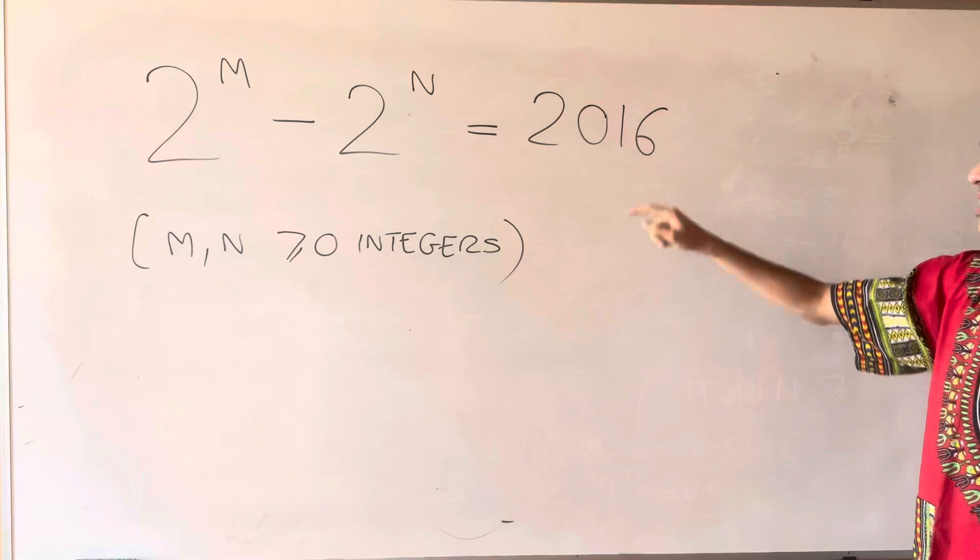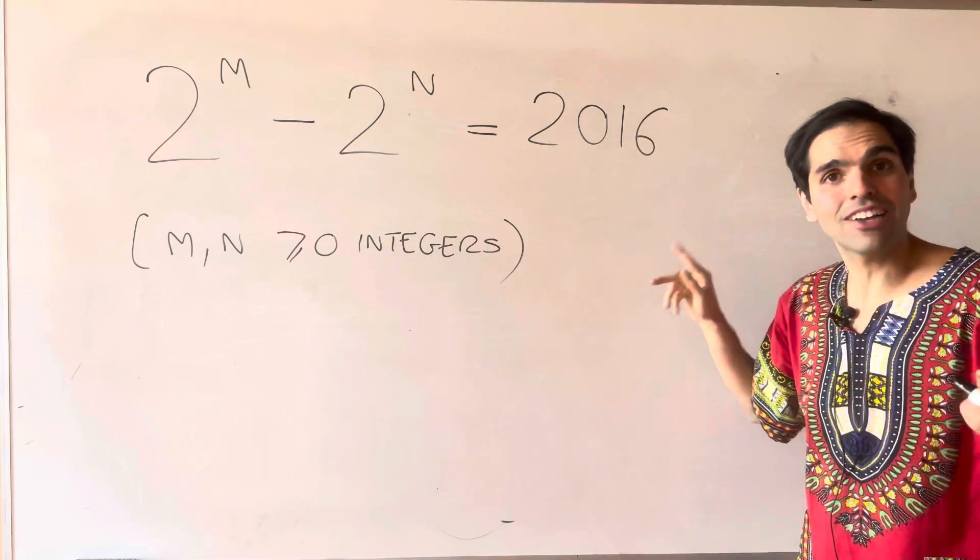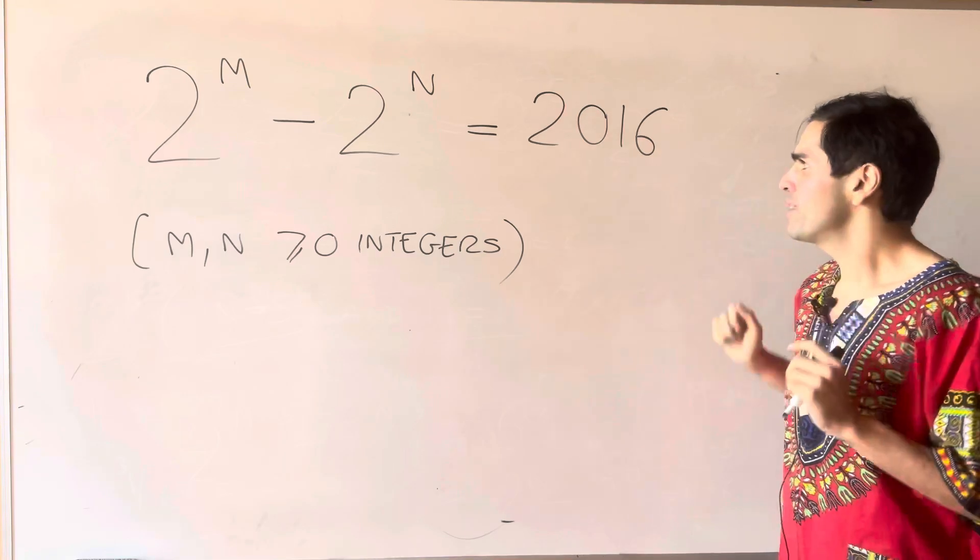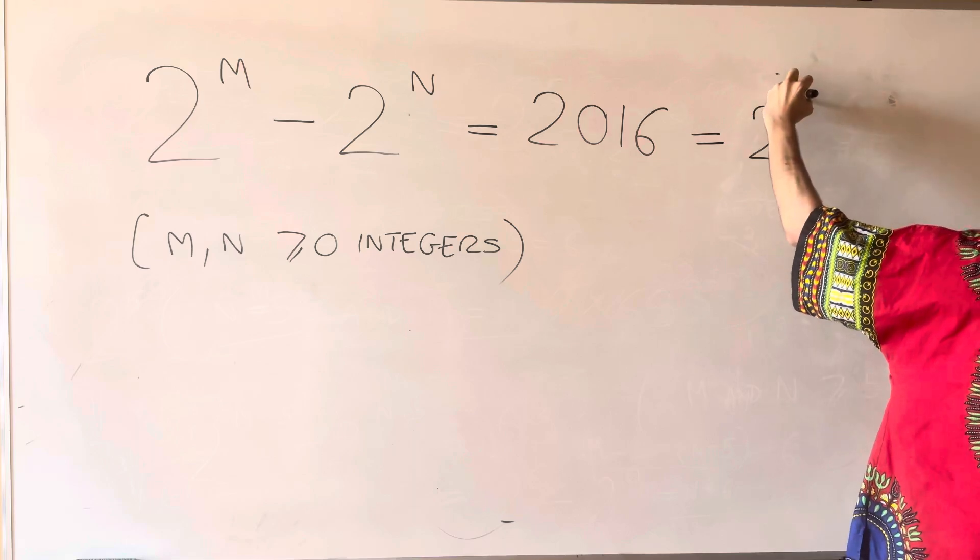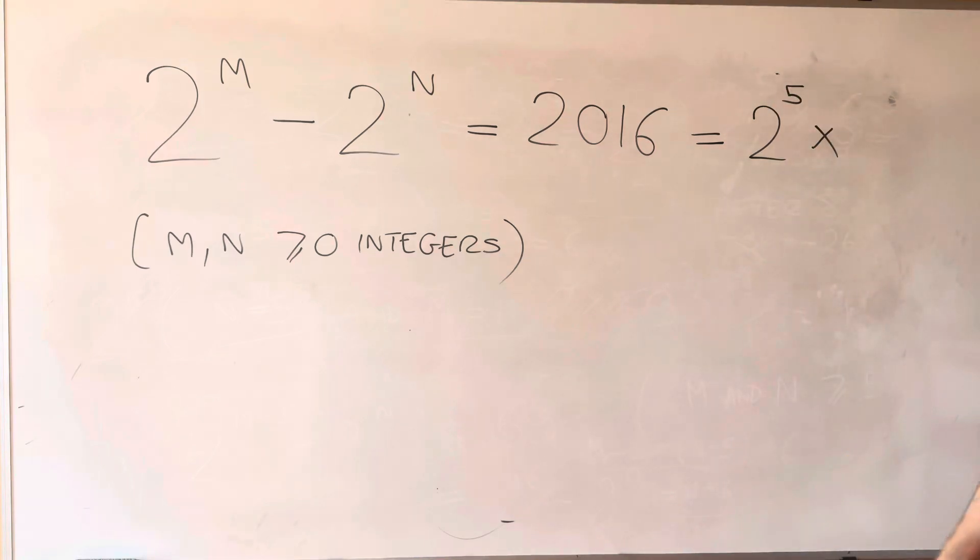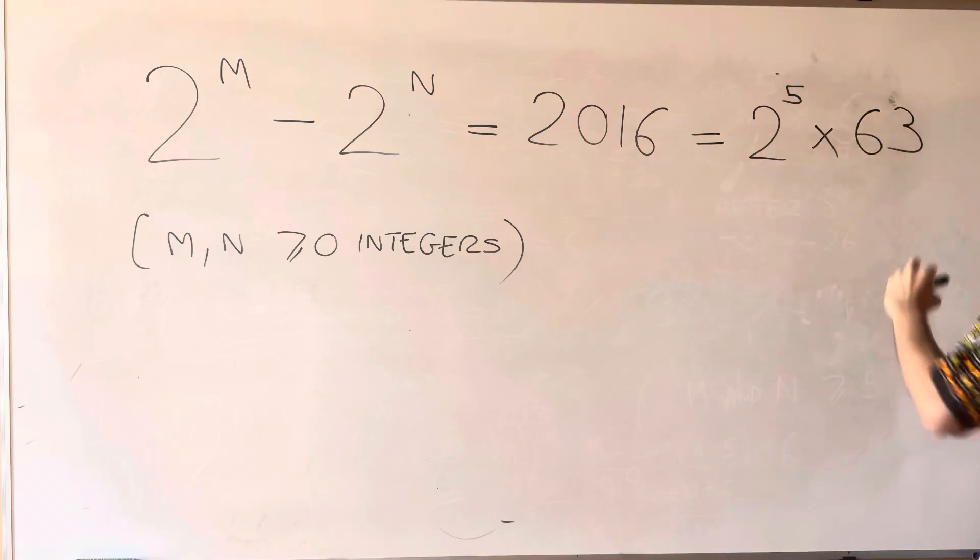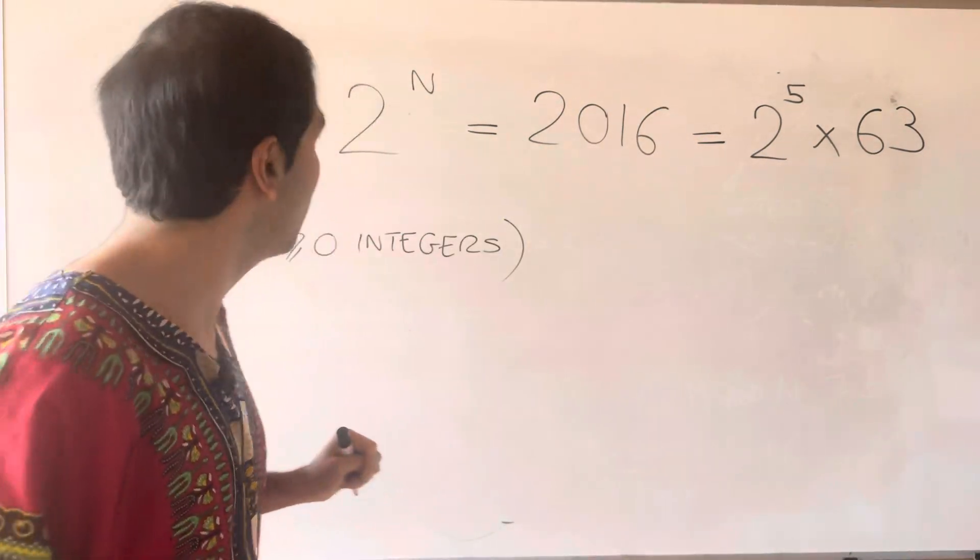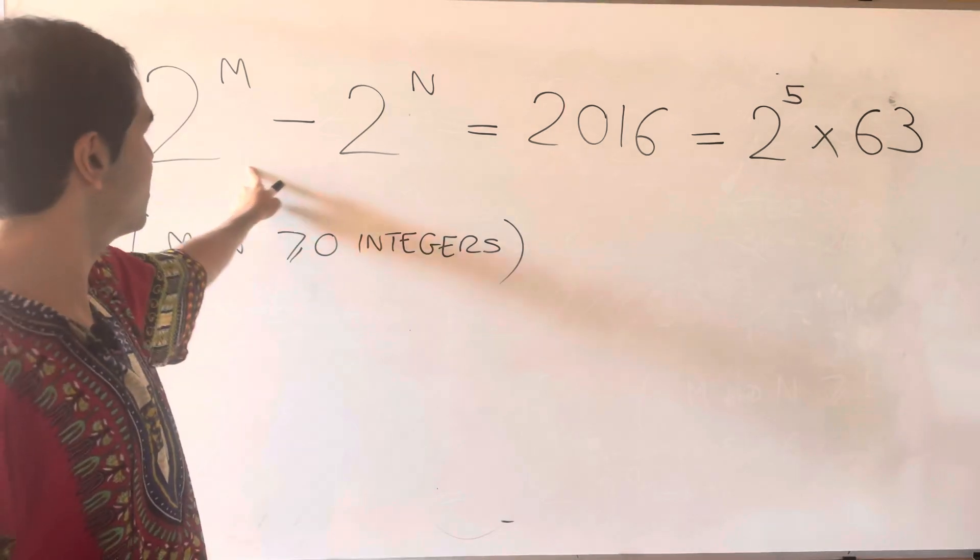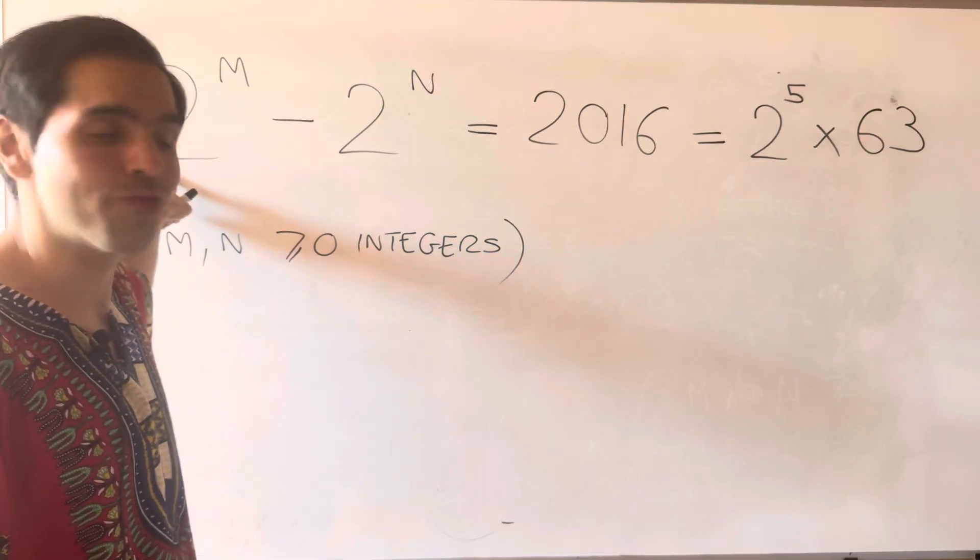The thing that really makes this work is the prime factorization of 2016 in the following sense: you can factor it out as 2 to the 5th times, in this case, 63. It's not a prime number, but that's all we need for now. This really suggests to factor out 2 to the 5th from this expression.